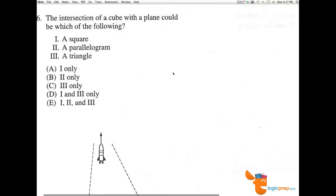Number six, the intersection of a cube. Here we have a cube with a plane could be which of the following?